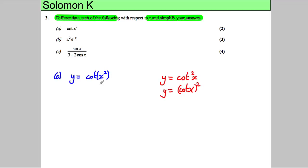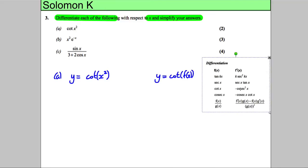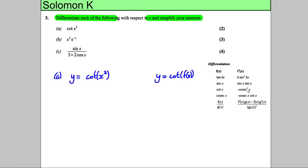I'm going to put brackets around it to remind me that it's cot of (x²). So basically what we're differentiating is y = cot of some function of x, which means we're going to apply the chain rule. The formula booklet gives us: if you differentiate cot, you get negative cosec squared. By the chain rule, if you differentiate cot of f(x), you get f'(x) multiplied by negative cosec squared of f(x).